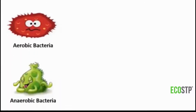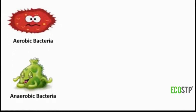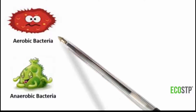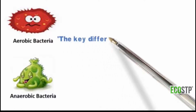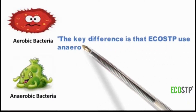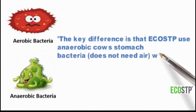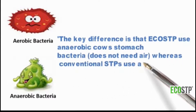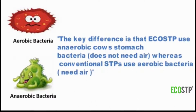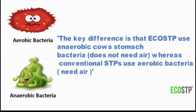Now let's look at how conventional STPs differ from EcoSTP. EcoSTP is based on anaerobic bacteria, whereas conventional systems are based on aerobic bacteria.